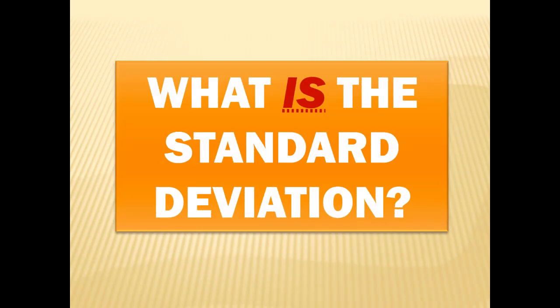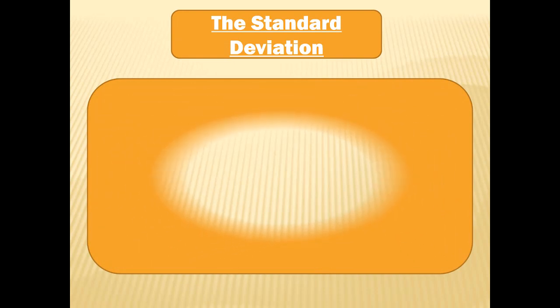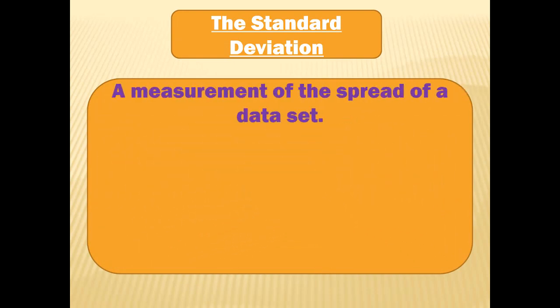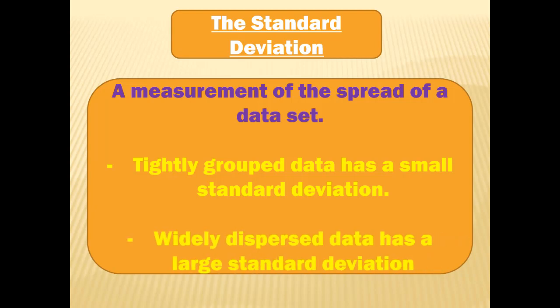What is the standard deviation? It's a measurement of the spread of a data set. If you have data values that are tightly grouped together — not much difference between those numbers — then that data set will have a very small standard deviation. When you have widely dispersed, very spread out data, that data will have a large standard deviation.